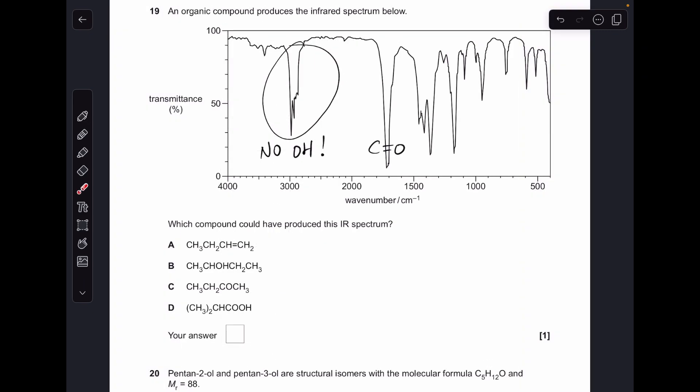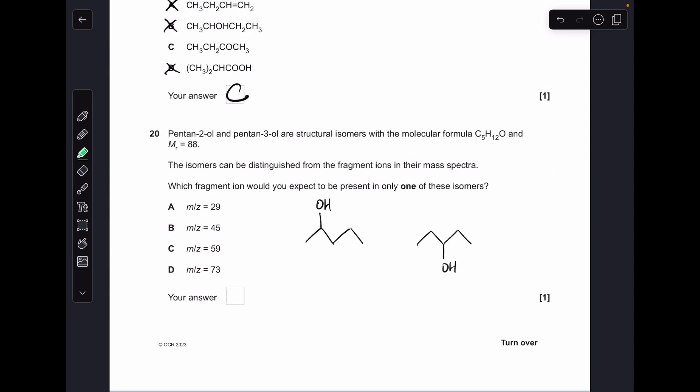Number nineteen. You can see I've already annotated the infrared spectrum. We don't have any OH groups so that rules out B and D. We have got a C double bond O so it rules out A. So C is the answer.